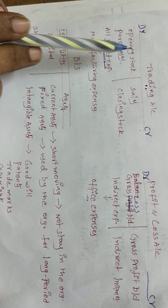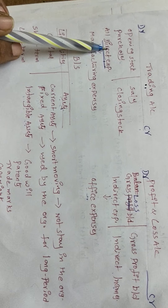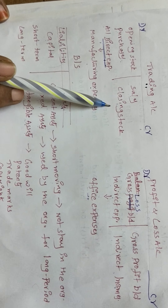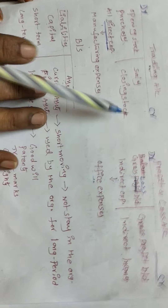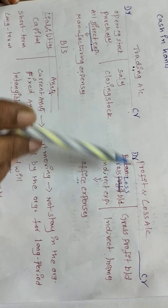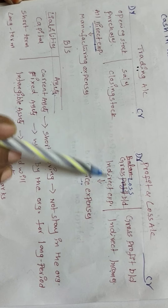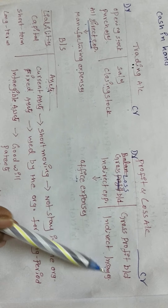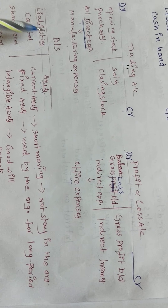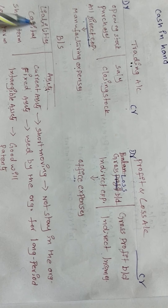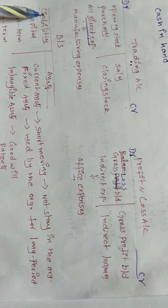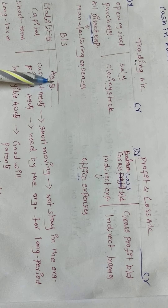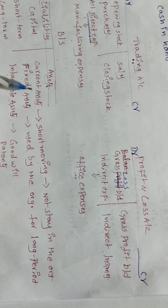To summarize: trading account — debit side has opening stock, purchases, and direct expenses; credit side has sales and closing stock. Profit and loss account — debit side has all indirect expenses; credit side has indirect incomes. Balance sheet — left-hand side has capital and liabilities; right-hand side has assets.